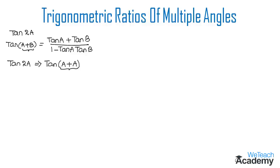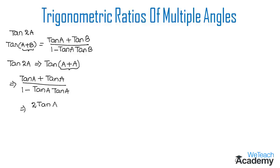By replacing b with a in the formula, we get tan a + tan a in the numerator, divided by 1 - tan a · tan a in the denominator. That gives us 2 tan a divided by 1 - tan²a. This is the formula for tan 2a.